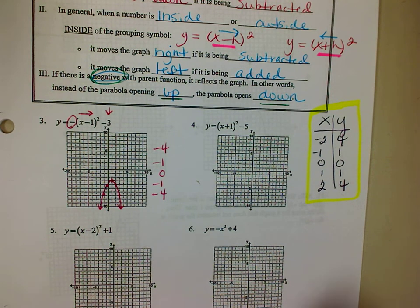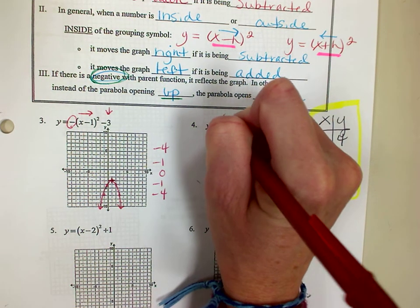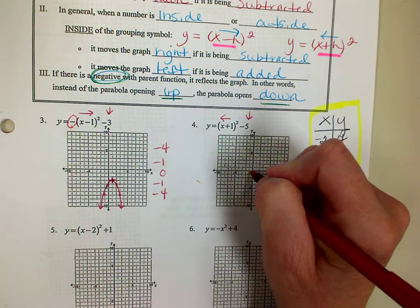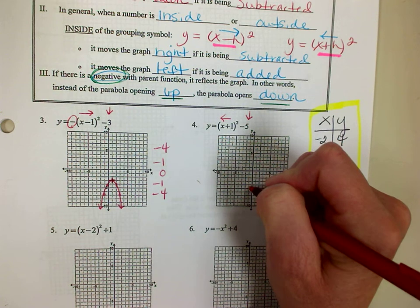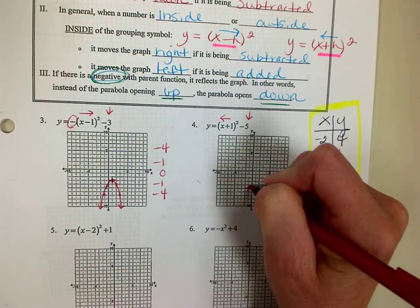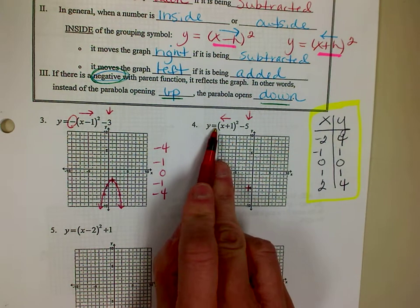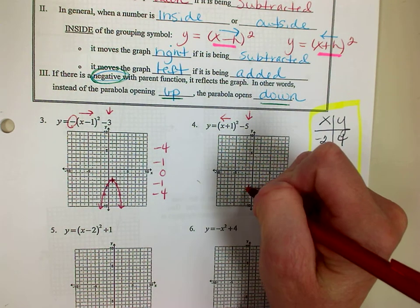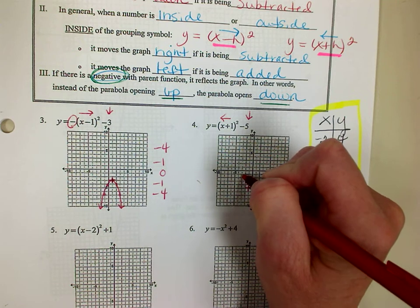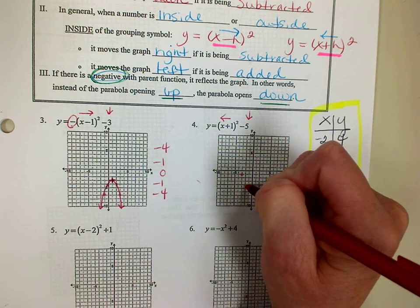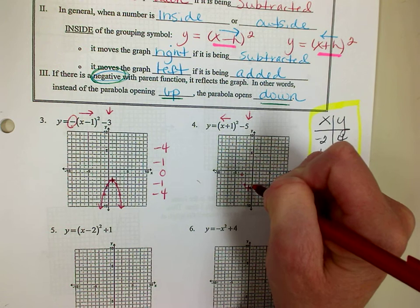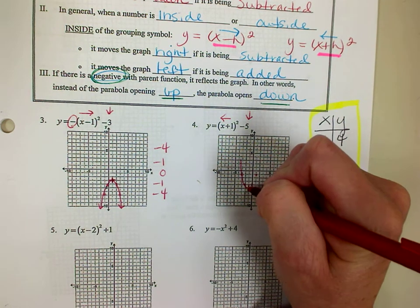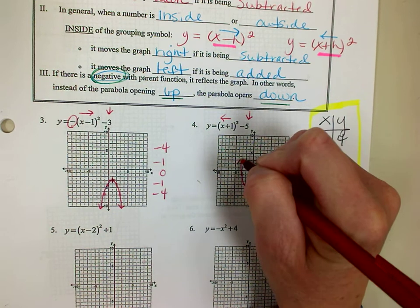Number 4. Again, I do the opposite if it's on the inside, so left 1, down 5 — there is my new origin. I don't have a negative in front, so I'm going to plot these points exactly how I see them from the table. And then we connect, and it should be a parabola.